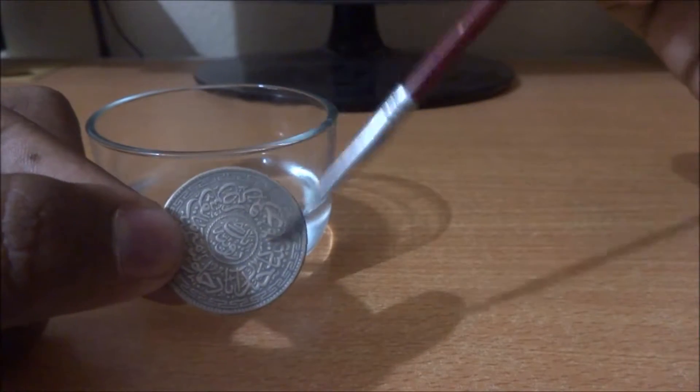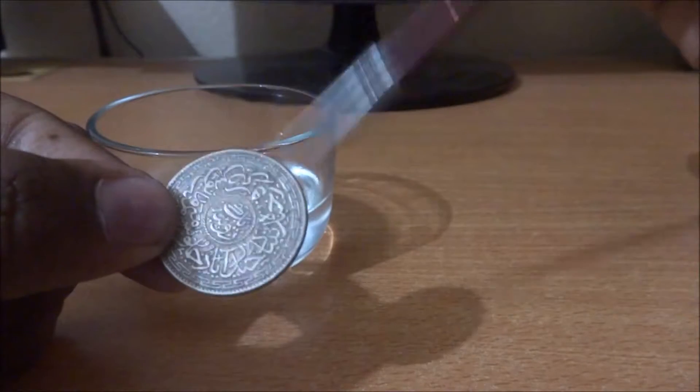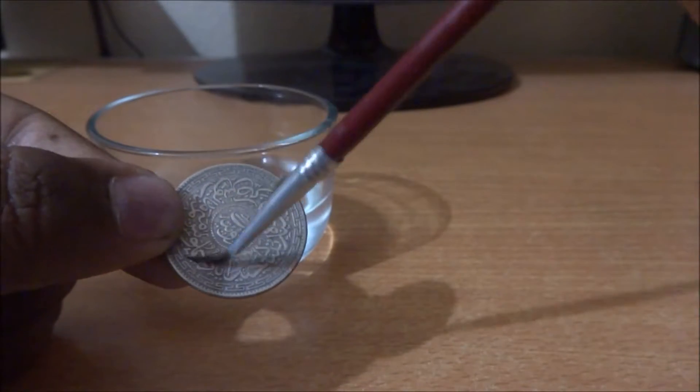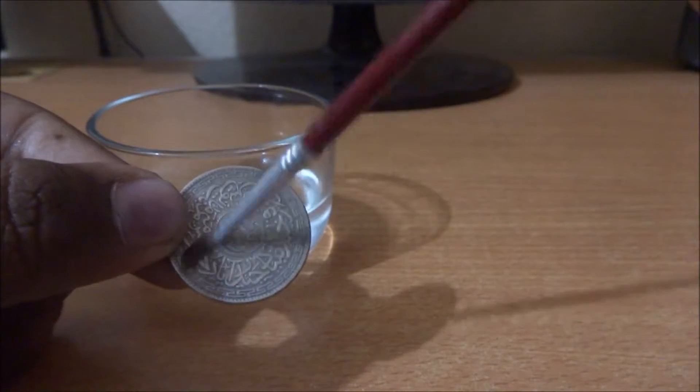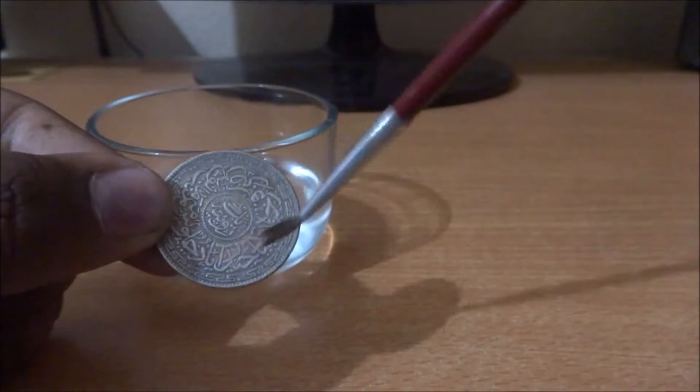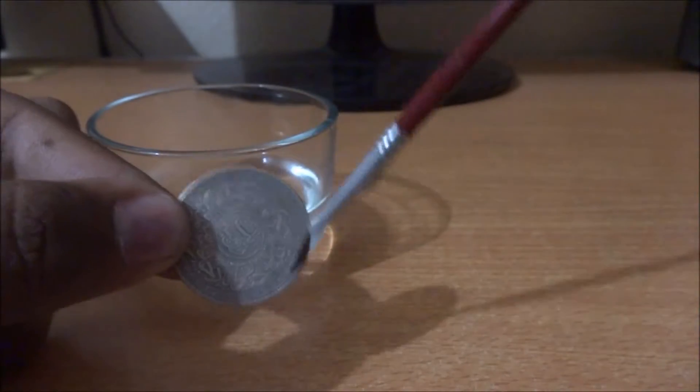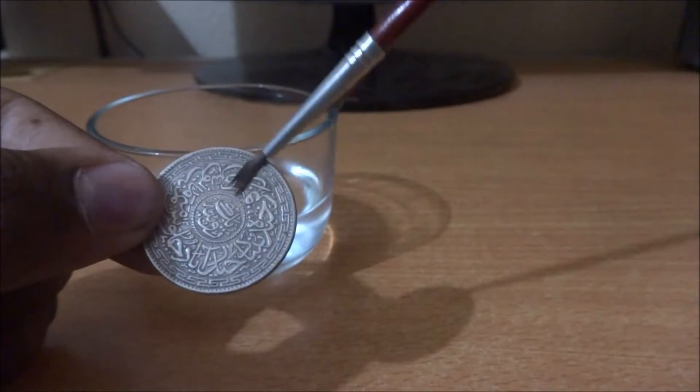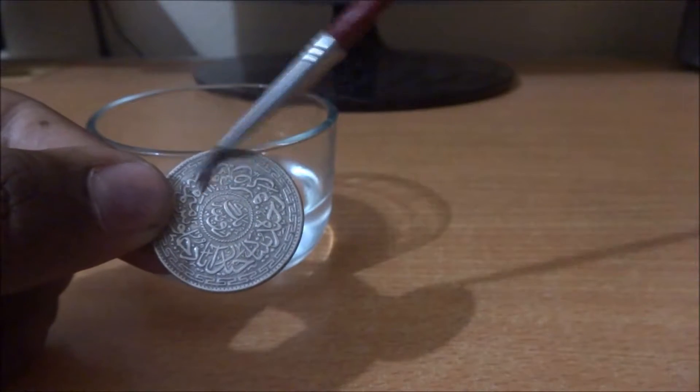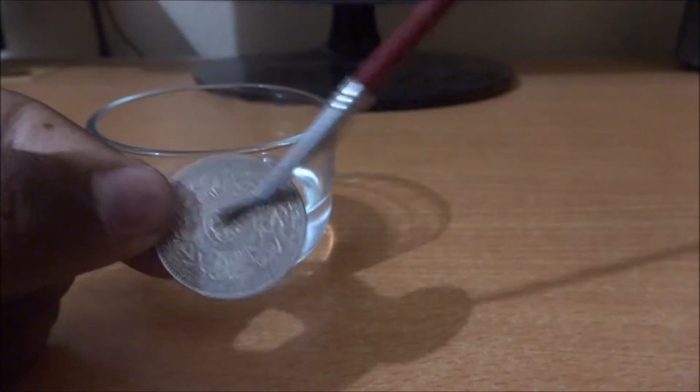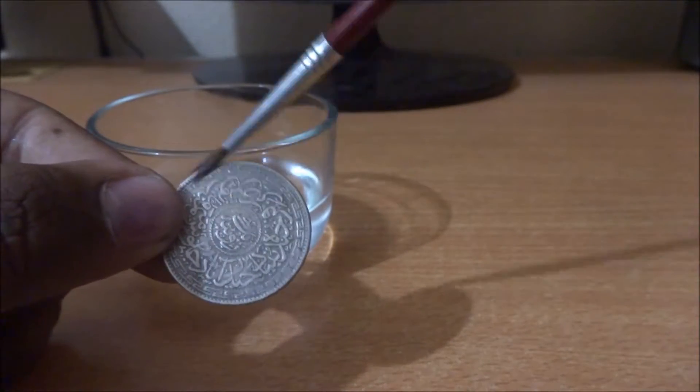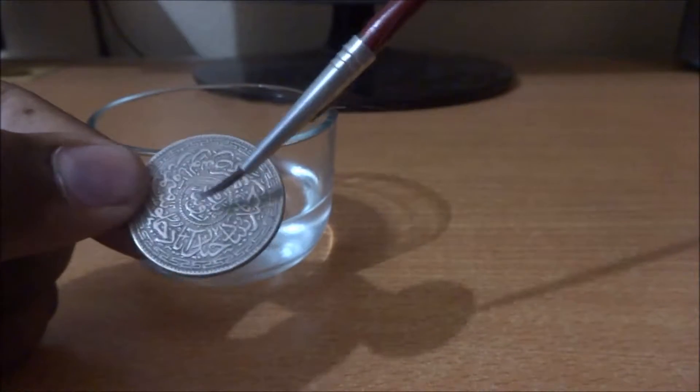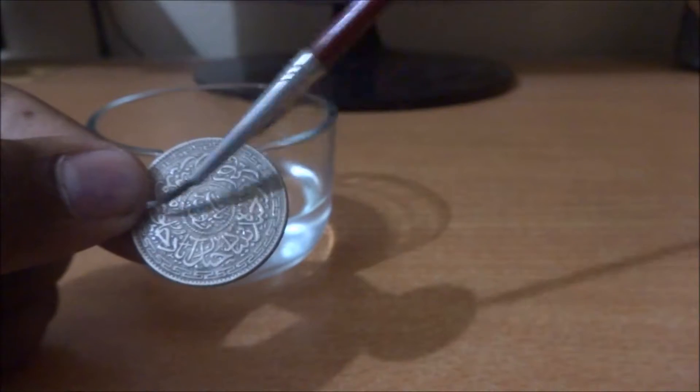If the black spots are very tough to remove, don't give more pressure on that. Let it be, otherwise the structure which is very important for coin collectors like us will wear off. Don't do that, it's risky.